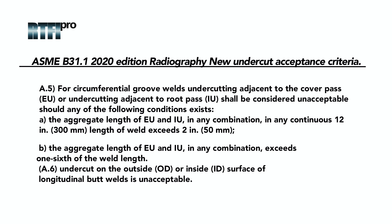The new 2020 acceptance criteria for ASME B31.1 for undercut is as follows. A.5: For circumferential groove welds, undercutting adjacent to the cover pass (external undercut) or undercutting adjacent to the root pass (internal undercut) shall be considered unacceptable should any of the following conditions exist.